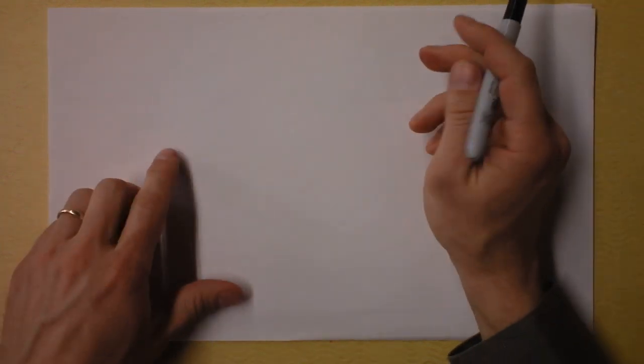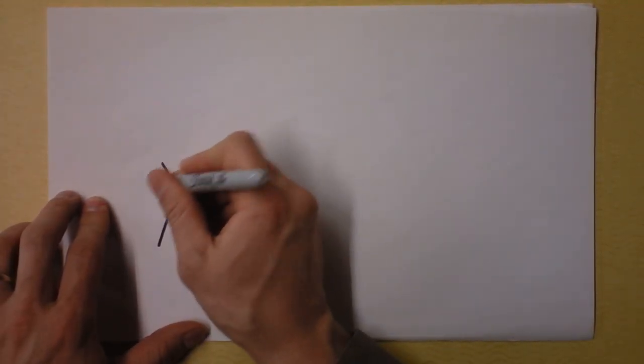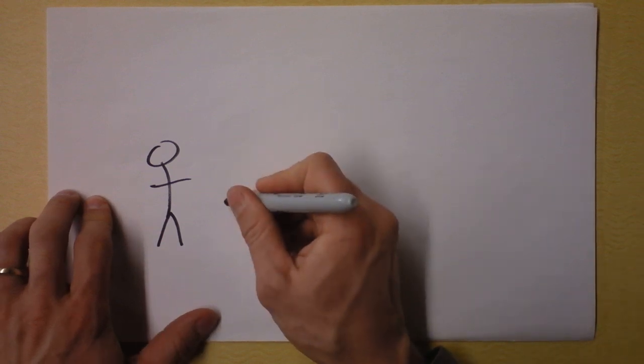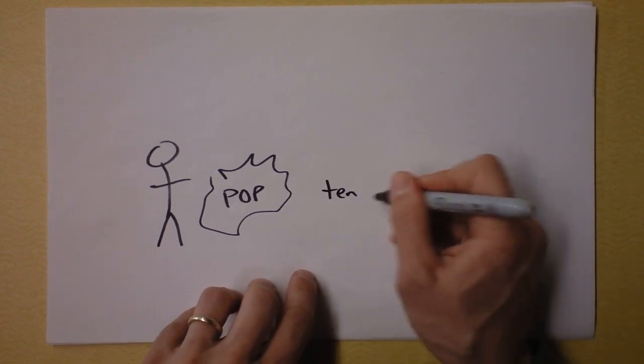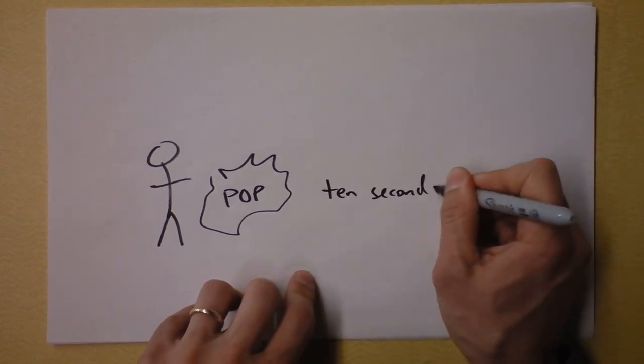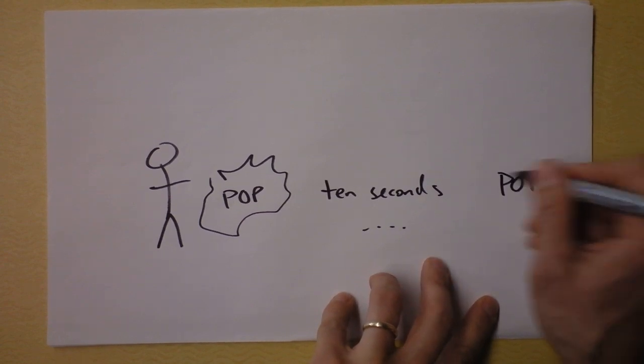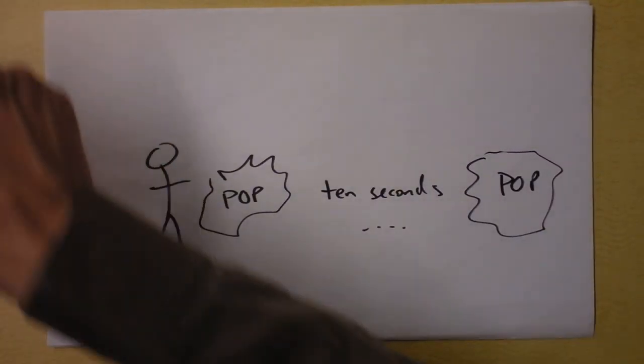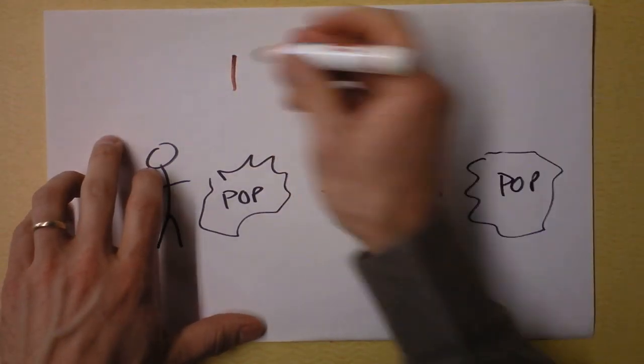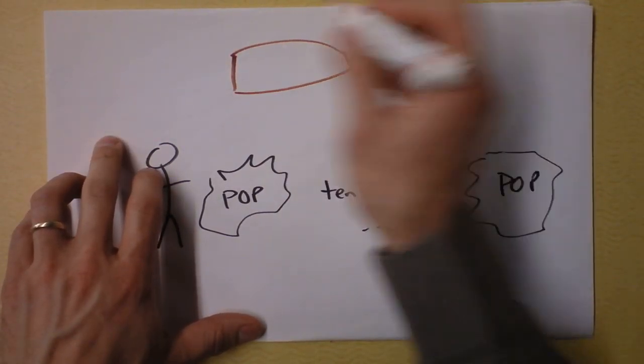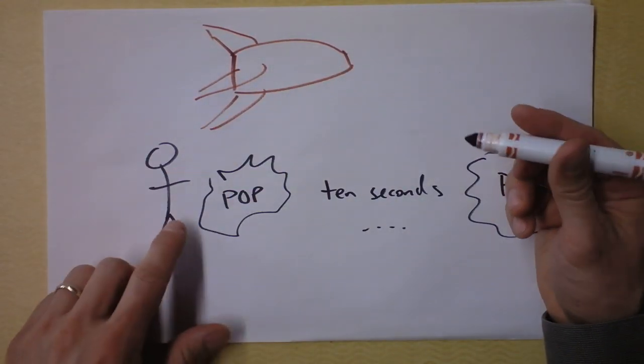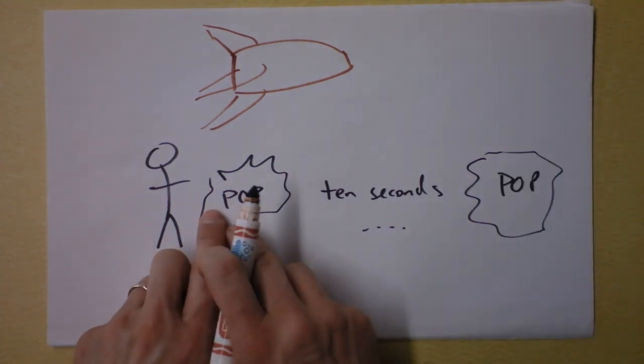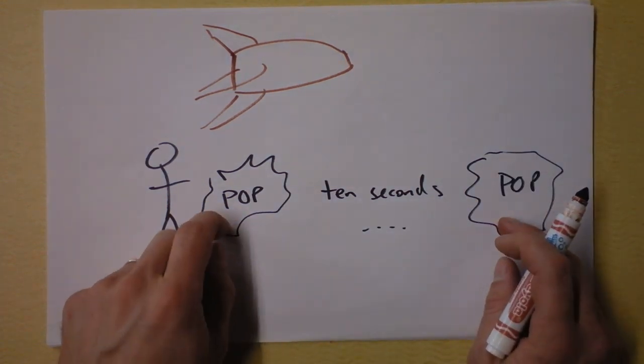Secondly, if two people experience time differently, then they will disagree about the time between two events. Somebody who's sitting here and shooting off firecrackers is going to say, Pop! With one of them. And then they'll wait 10 seconds. And then they'll set up another one and they'll go, Pop! But if you're zooming by on a rocket ship, right? Let's make this an actual rocket ship, not a fish. If you're zooming by on a rocket ship going, I don't know, 87% the speed of light, then you will see this time as much what? Much shorter or much longer?